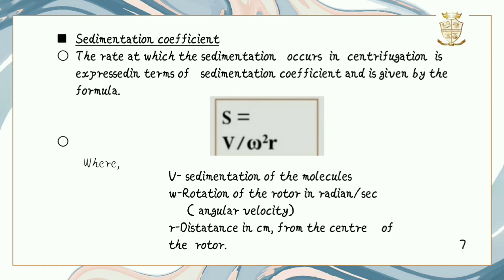The rate at which sedimentation occurs in centrifugation is expressed in terms of the sedimentation coefficient, and is given by the formula: S = v / (ω²r), where v is the sedimentation velocity of the molecules, ω is the rotation of the rotor in radians per second (the angular velocity), and r is the distance in centimeters from the center of the rotor.